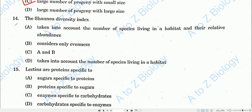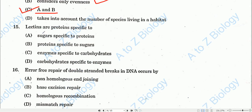Question number fourteen: The Shannon diversity index is one of the diversity indices. It considers evenness (option B) and also takes into account the number of species living in a habitat and their relative abundance (option A). Both A and B are correct, so option C (both A and B) will be the correct one.